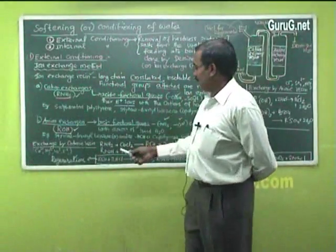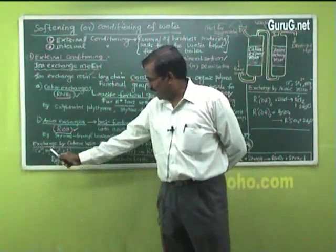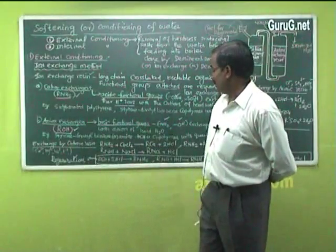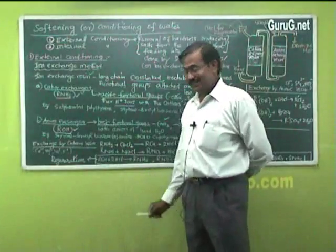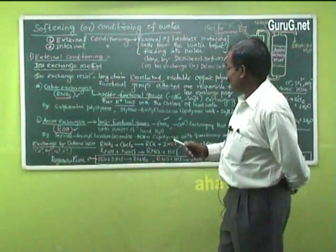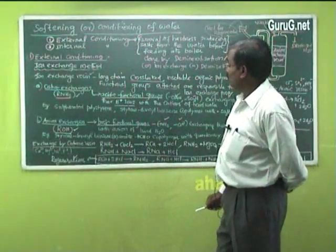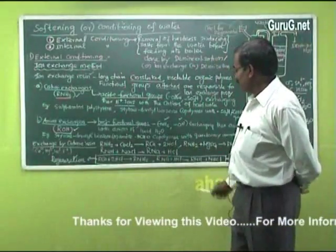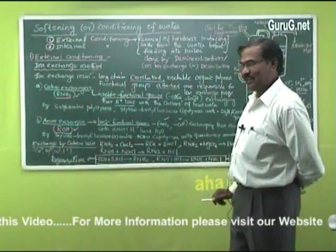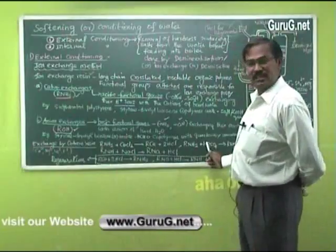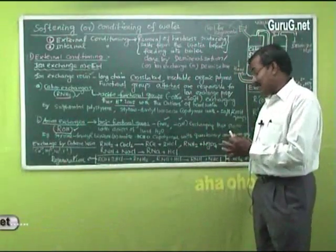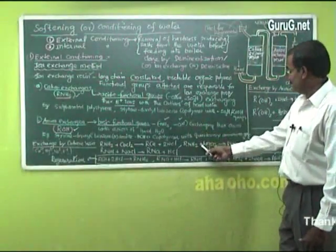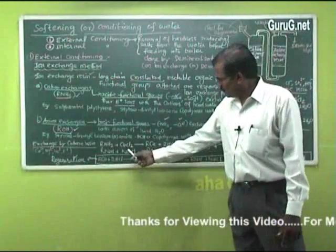When water is passed through the cationic exchange resin, the cations of hard water — calcium, magnesium, sodium, and potassium ions — are exchanged by the cation of the resin. So R-H2 exchanges Ca2+ and Mg2+, which are the main hardness-causing constituents. The water coming out is free from Ca2+, Mg2+, Na+, and K+ ions.